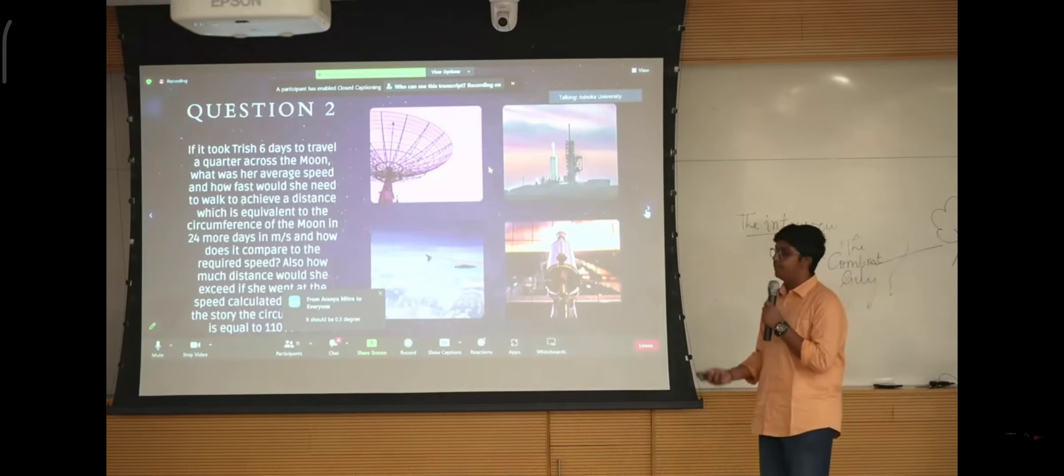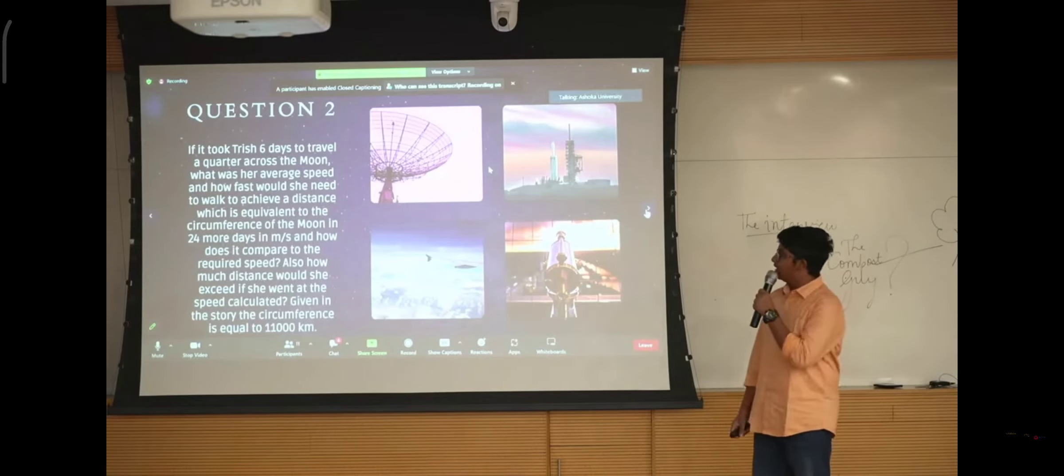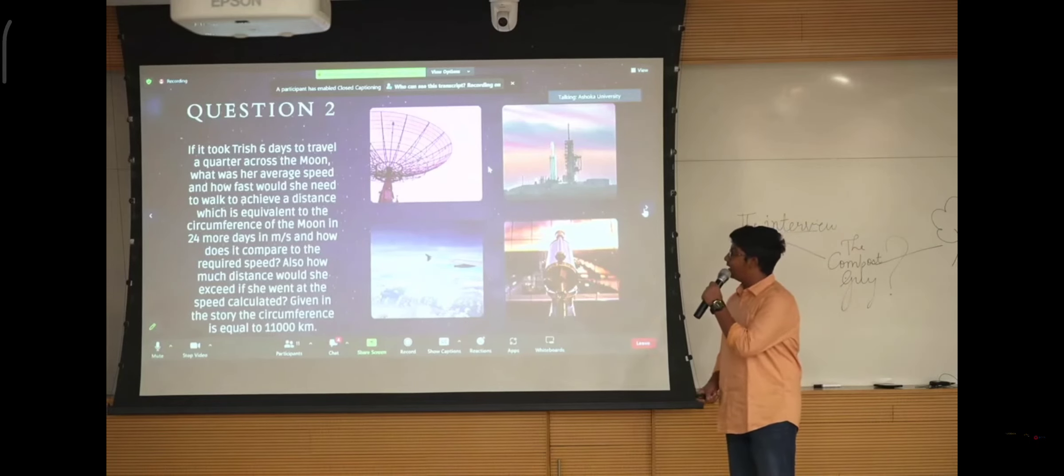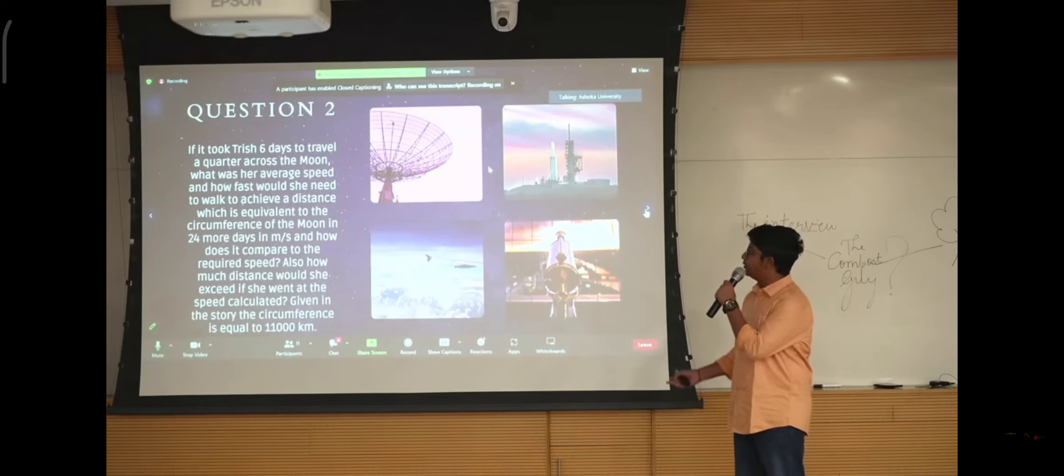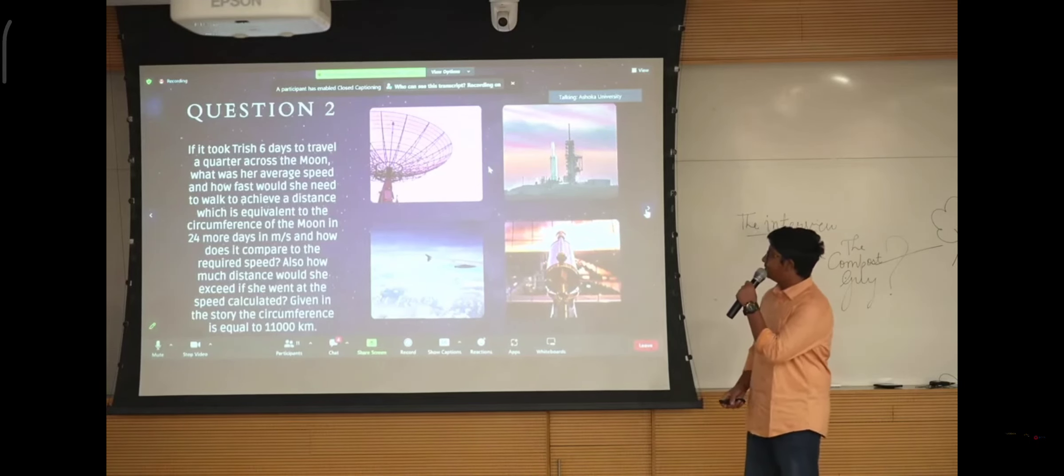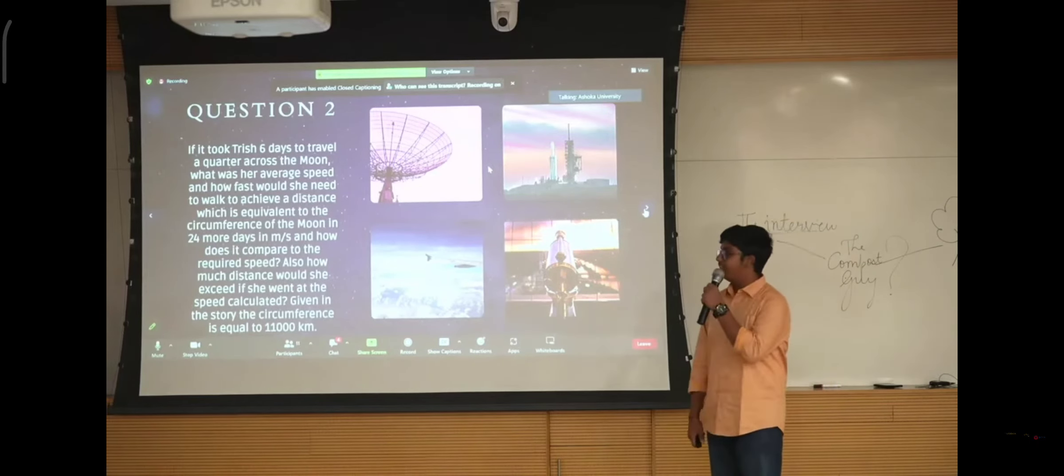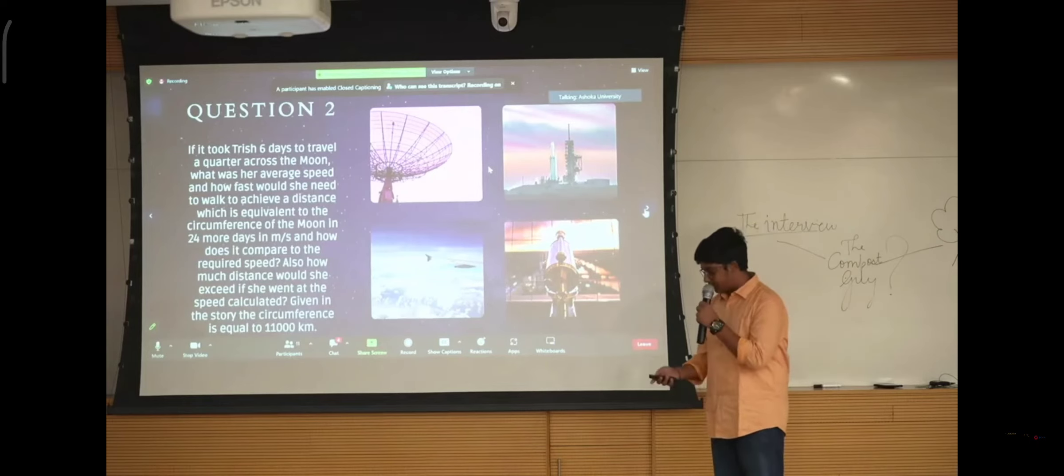So the next question is, if Trish takes six days to travel quarter across the moon. So what is, we have to calculate her average speed and how fast she would need to move to achieve a distance which is equal to the circumference of the moon in 24 more days. And we have to compare how fast she has to move to the required speed. And so also we need to calculate what is the distance if she moves at the speed she is going right now. And with the circumference given in the story as 11,000 kilometers.